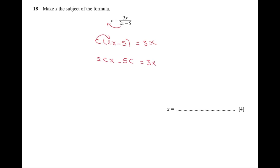Now to make x the subject, we have to have all x's on the left-hand side. Send negative 5c to the opposite side: 2cx minus 3x is equal to 5c.